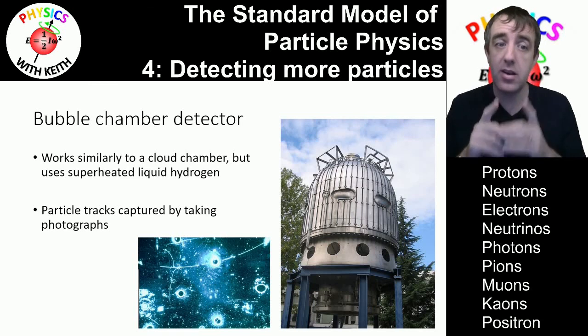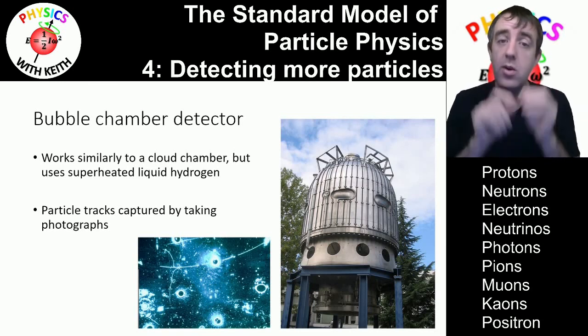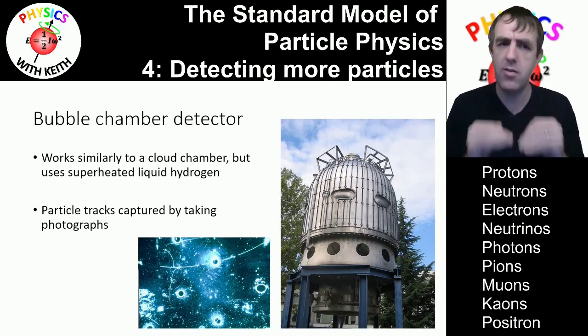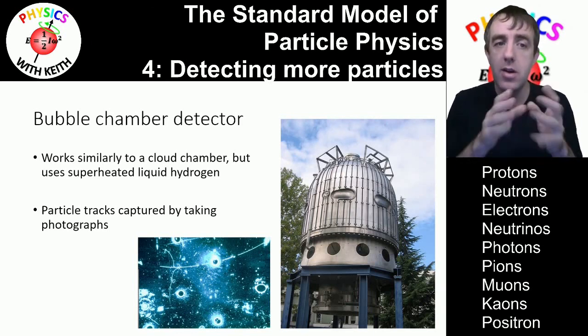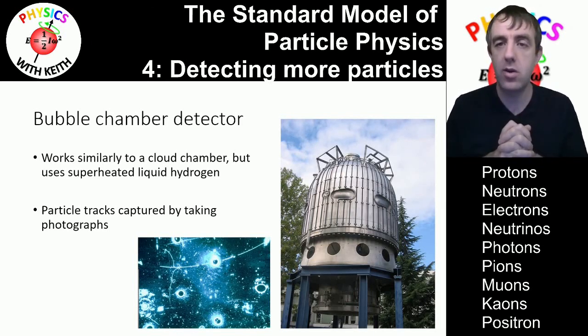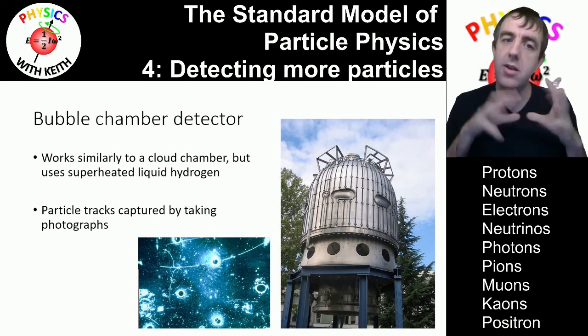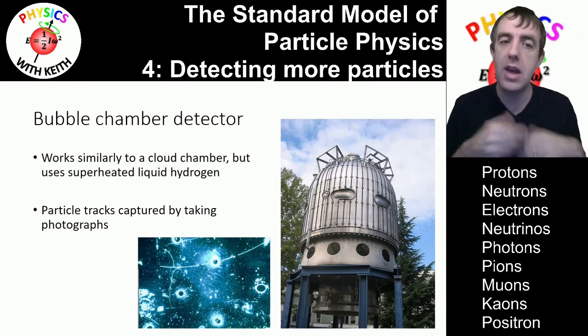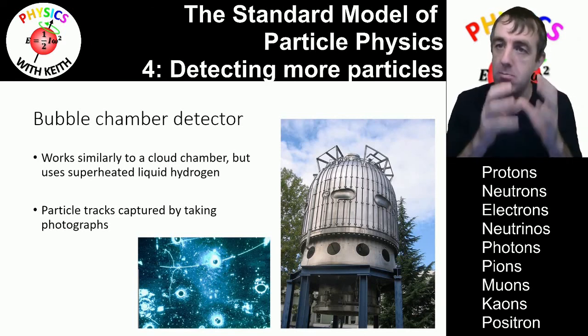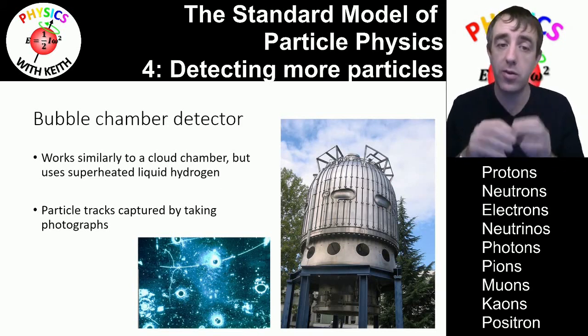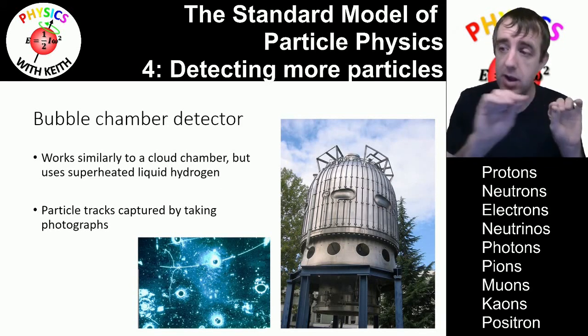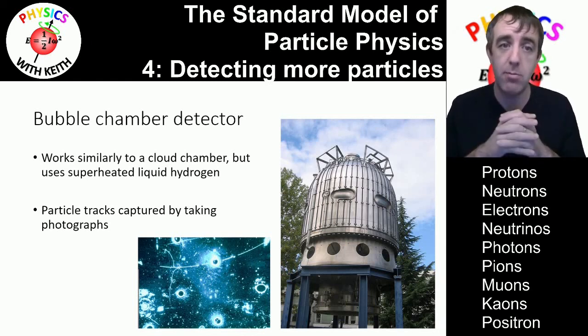Bubble chambers work very similarly to cloud chambers, except they use liquid hydrogen, which usually is very cold. But you heat that liquid hydrogen up. Now, where it says superheated liquid hydrogen, that's still really cold, but it's under pressure. So, even though you've heated the hydrogen, it remains a liquid. That means particles passing through this superheated liquid hydrogen will cause it to vaporise, leaving a little trail of bubbles behind, which is why it's called a bubble chamber.